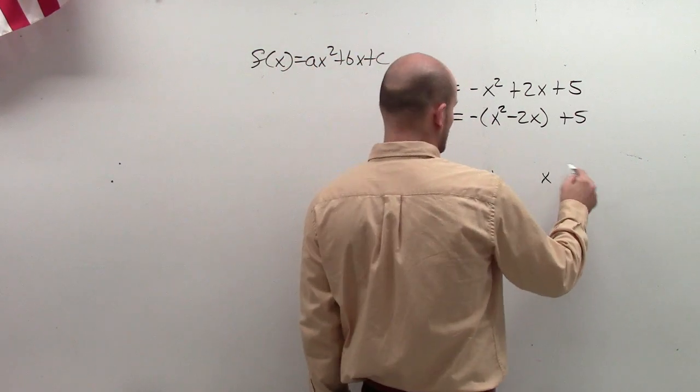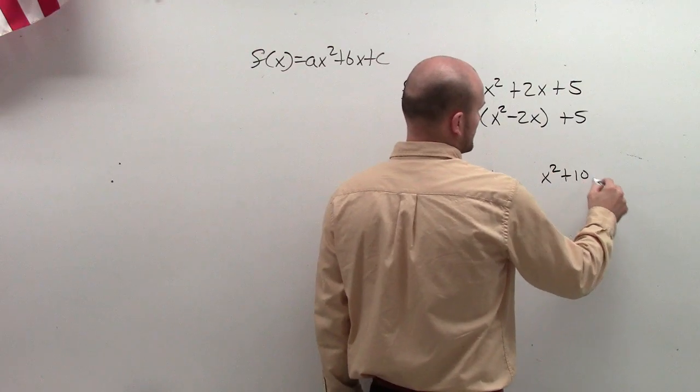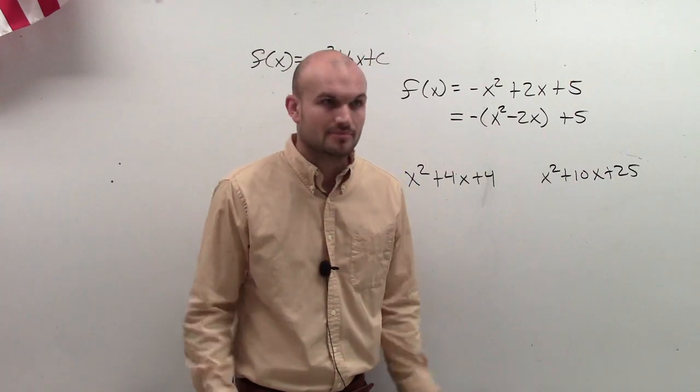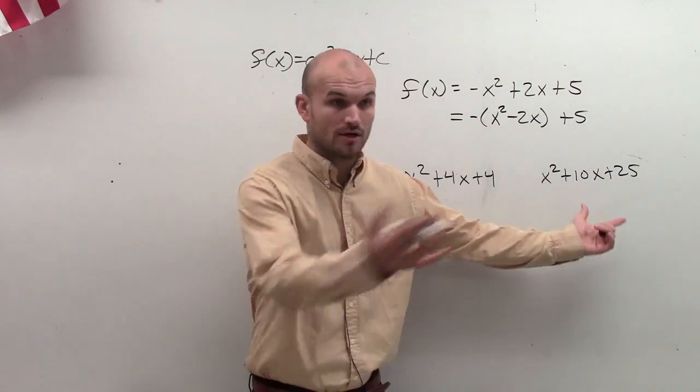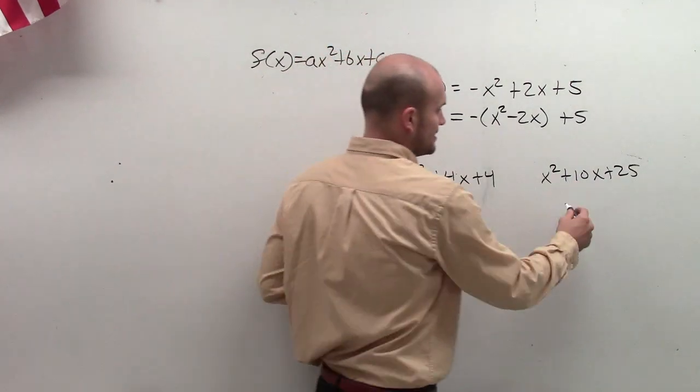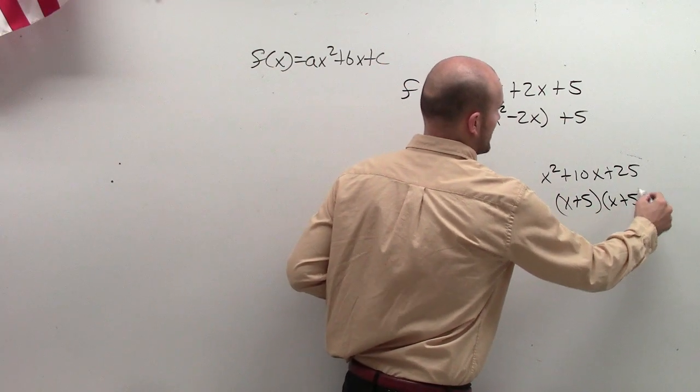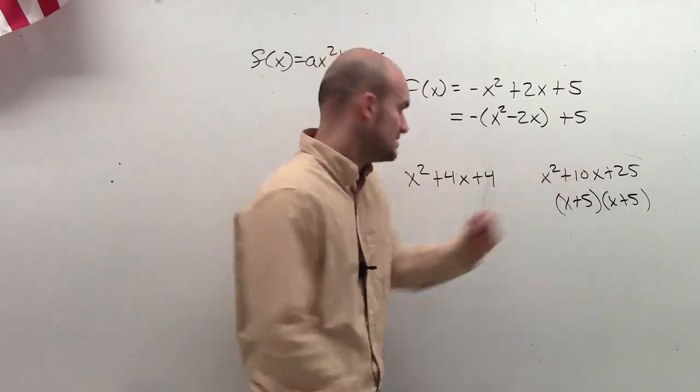I'll just give you guys two good examples: x² + 10x + 25. These are two perfect square trinomials. Why are they perfect square trinomials? Well, if you practice factoring them, this comes into (x + 5)(x + 5). 5 times 5 is 25. 5 plus 5 is 10.